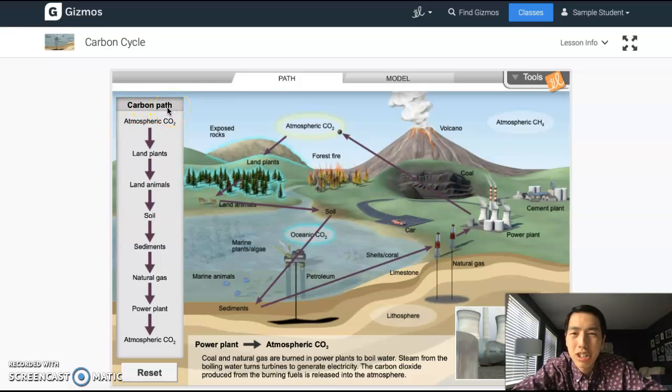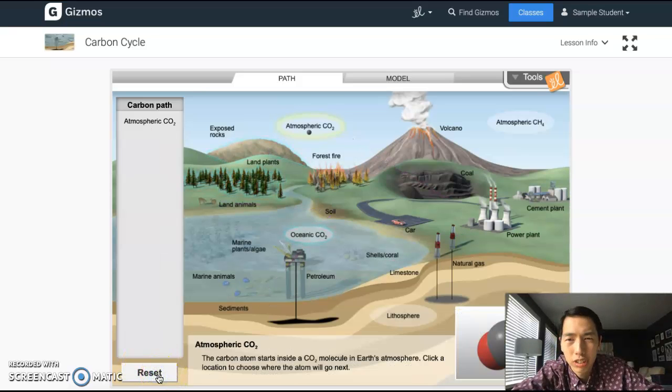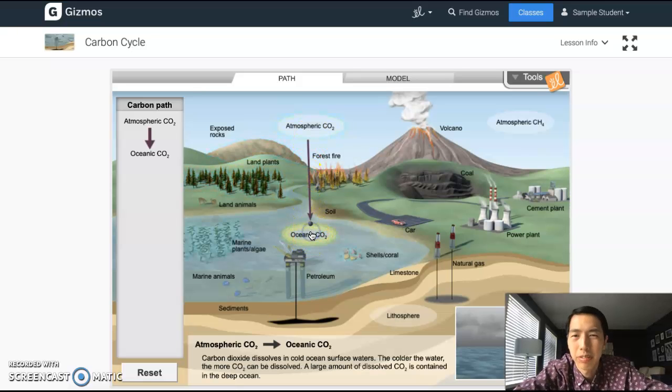On the left here is a summary of everything you clicked, and they call it a carbon path. So what this simulation does is you create a carbon path and you learn about it. Okay, you learn about it by reading the notes every step of the way. So that's one carbon path. You can click reset. Click reset and start over. Notice how you always start at the same spot though—the simulation always starts at atmospheric CO2.